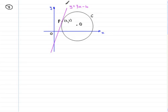Welcome to question number 7. In this question we're given the following diagram. It shows the line y equals 3x minus 4 which is a tangent to the circle C. It touches C at the point P which is 2, 2. And the point Q is the centre of the circle.